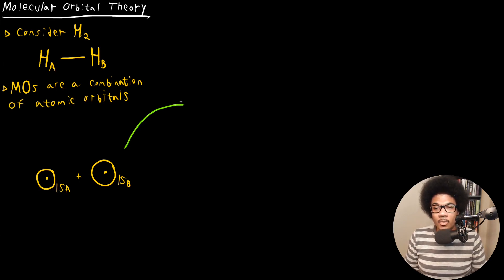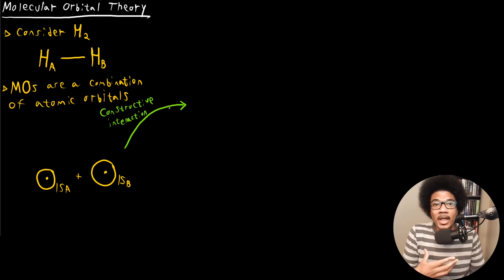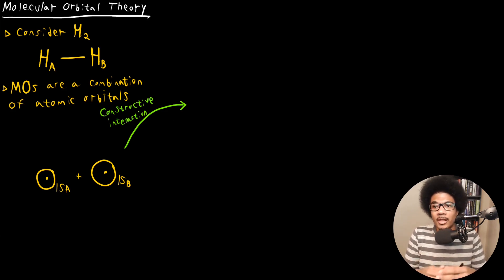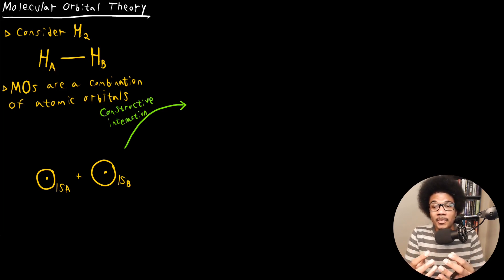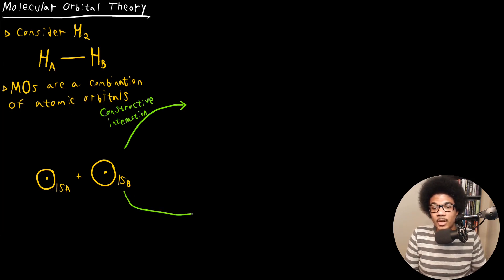What we're going to have is an interaction between these two orbitals, 1sA and 1sB. One interaction is going to be a constructive interaction. When I talk about constructive, I'm talking about the wave properties — the inherent wave properties of these orbitals. Electrons behave like waves; there's a duality between waves, particles, and matter. So when these orbitals come together, they can have constructive interference or destructive interference.